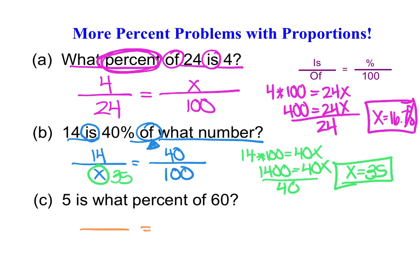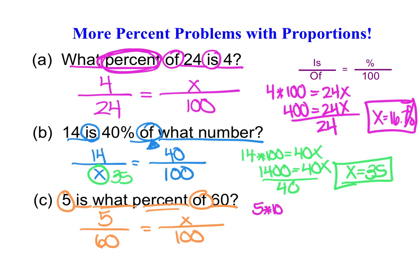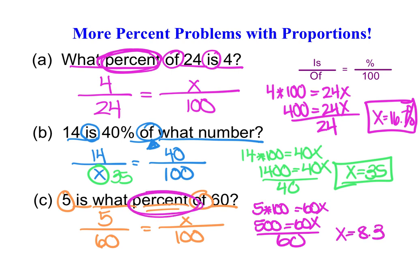Finally: '5 is what percent of 60?' The 'of 60' puts 60 in the denominator, '5 is' puts 5 in the numerator, and 'what percent' means x goes over 100. Cross-multiplying gives 5 × 100 = 60x, so 500 = 60x. Dividing by 60 gives x ≈ 8.3. Because this is asking for a percent, the answer is approximately 8.3%.